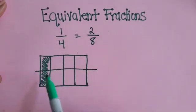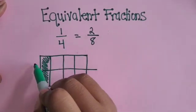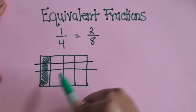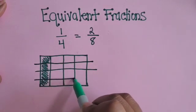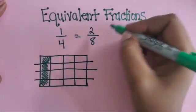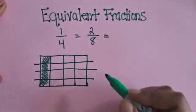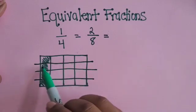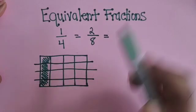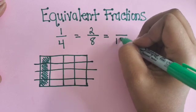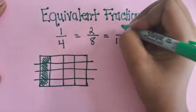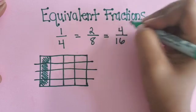If we went another step forward and partitioned each of those halves horizontally — partitioning it into fourths horizontally — now we have a new denominator: 2, 4, 6, 8, 10, 12, 14, 16. That gives us 16 total parts and 1, 2, 3, 4 of those parts shaded in, so 1 fourth is also equivalent to 4 sixteenths.